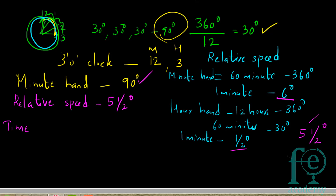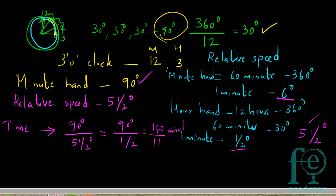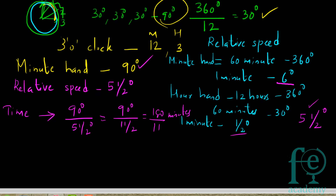Now you can find out the time. The time required to travel 90 degrees at a relative speed of 5 and a half degrees per minute is: 90 ÷ (11/2) = 90 × (2/11) = 180/11 minutes.